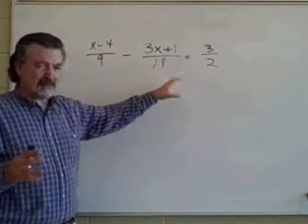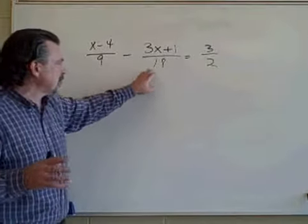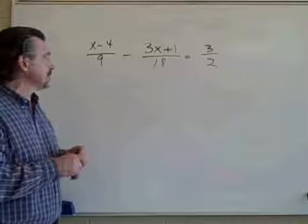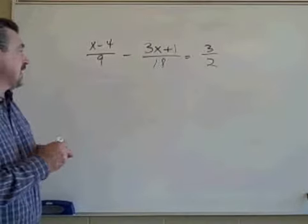And in this case, that happens to be 18. 18 multiplied times each of those denominators would cancel them completely. So I'm going to multiply both sides of the equation by 18.